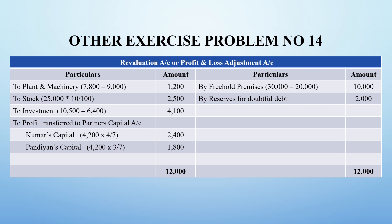The first revaluation: freehold premises is now ₹30,000 and earlier it was ₹20,000, so there is an increase. Next, plant and machinery is now ₹7,800 — previously it was ₹9,000 — so the asset reduced in value by ₹1,200, which goes to the debit side. Stock has been discounted by 10%.